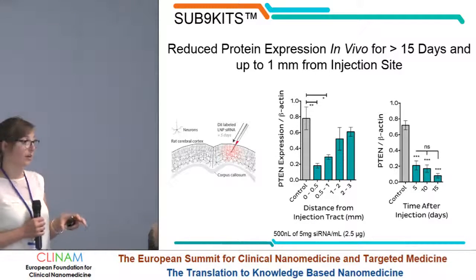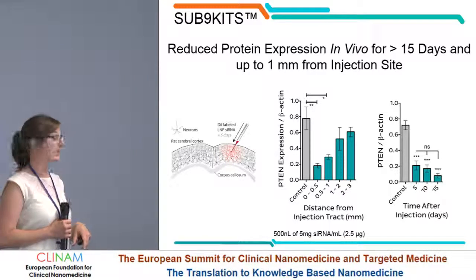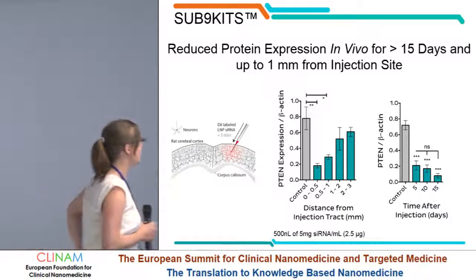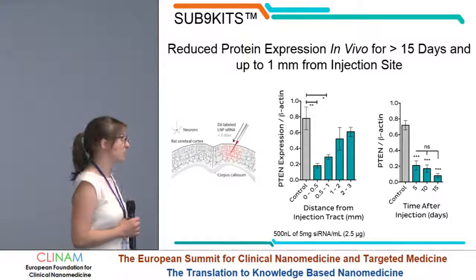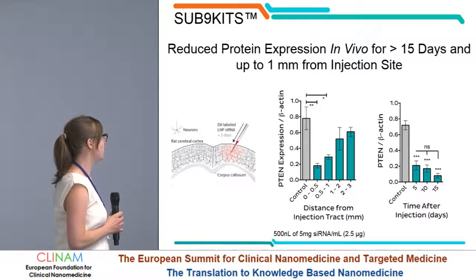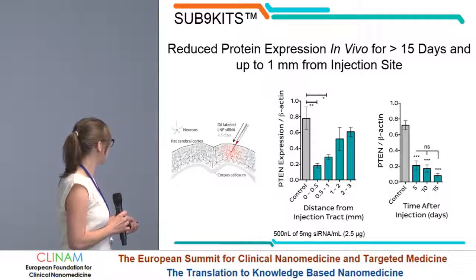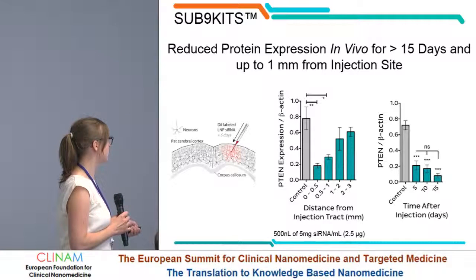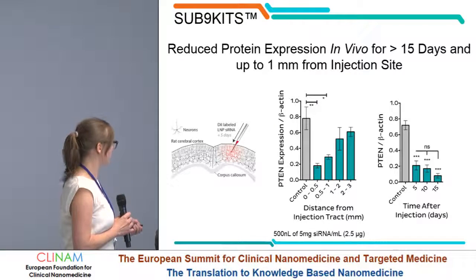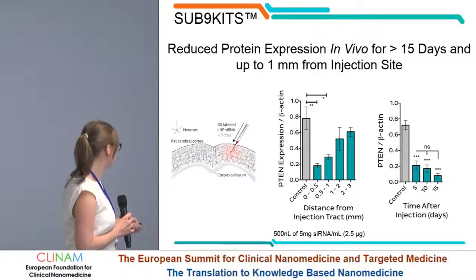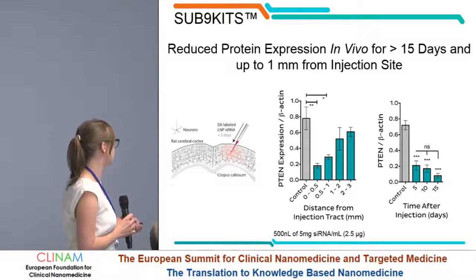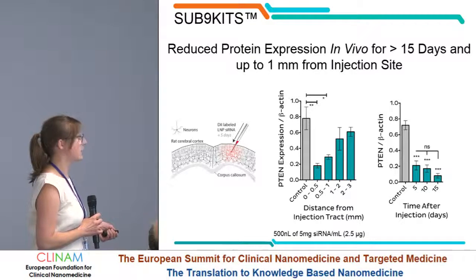Going back to gene knockdown but now in vivo data: in this experiment, still targeting the p10 gene, nanoparticles were directly injected into the brain of mice. The p10 expression was measured at distances from the injection site of up to three millimeters. We see very efficient gene knockdown up to 0.5 millimeters, and even at one millimeter, over 50% knockdown is achieved. This can be sustained for up to 15 days.